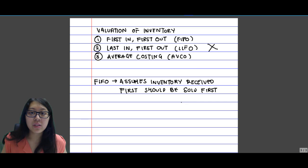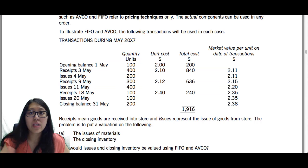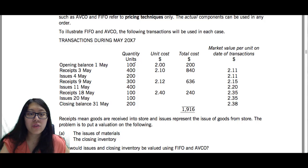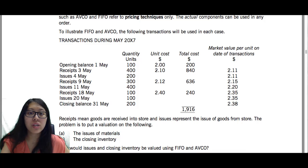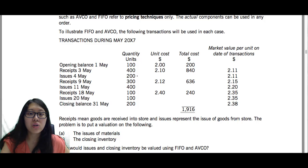Let's take a look at this example from the F3 BPP study text, page 127. On 1st May, there was opening inventory of 100 units at an individual cost of $2. Then on 3rd May, further receipts of 400 units were bought at $2.10 each. FIFO and AVCO are going to be used to value the issues and closing inventory. On 4th May, 200 units were issued. Using FIFO, the goods that came in first should be sold out first.